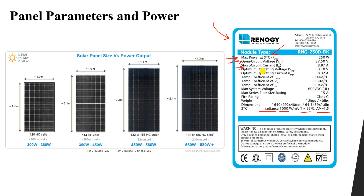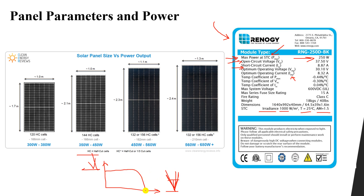We also have the optimum operating voltage and optimum operating current. Vmp is the voltage at maximum power and Imp is the current at maximum power. To get this maximum power of 250 W from the I-V curve, there is a specific point of maximum power occurring at a current of 8.87 A and a voltage of 30.10 V.